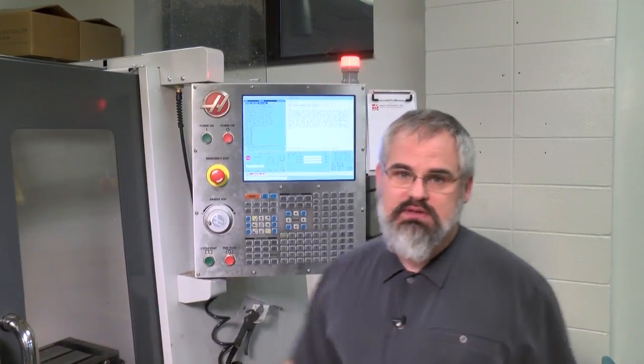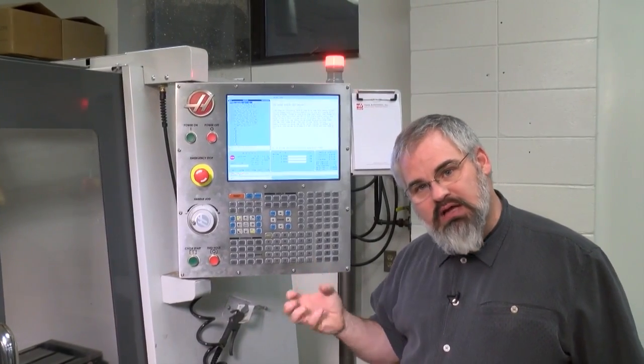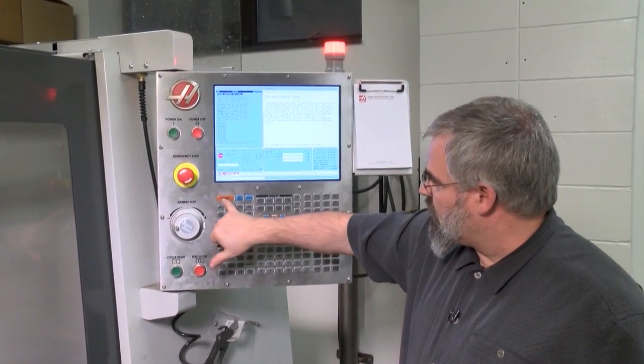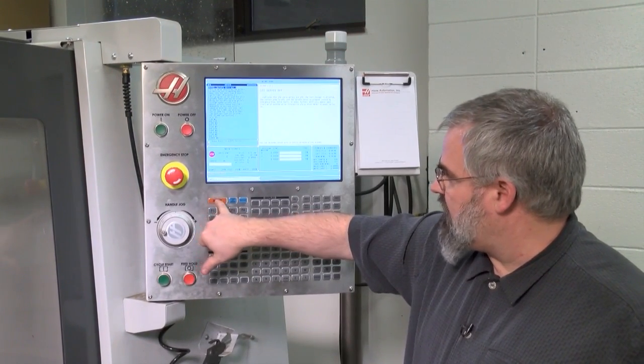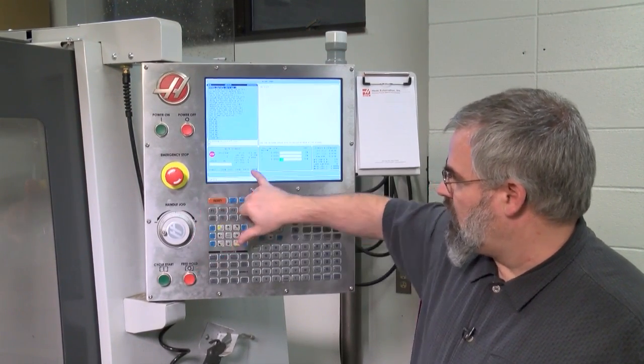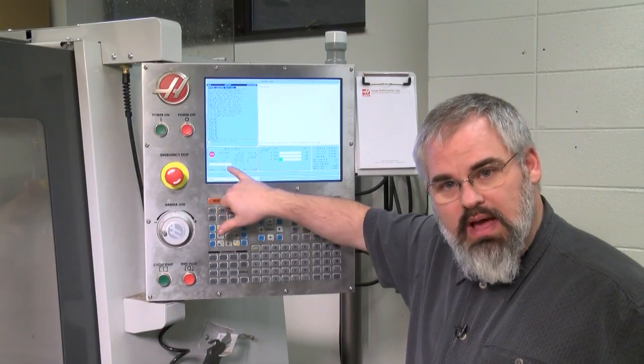Next, it's going to ask us to open the door and then close it. That just checks the interlocks to make sure that those are working correct. Then we're going to hit reset and we just keep hitting reset until all the error messages go away. That's normal.